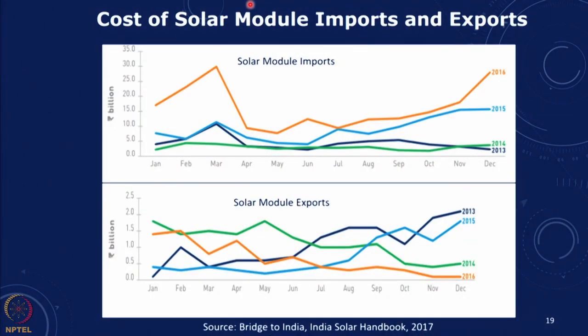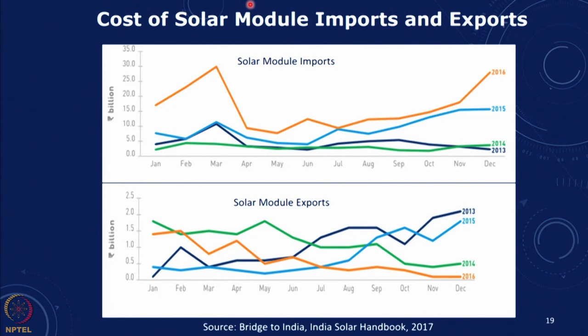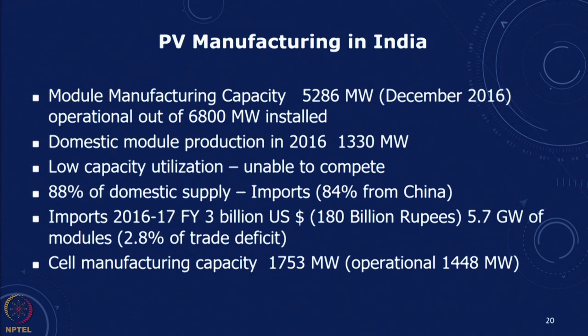Another issue to think about when talking about transitions: when we started the solar mission, India was a net exporter of PV. But today we are importing more than 80 percent of our modules, most of it from China. The module manufacturing capacity in 2016 was about 5,300 megawatts which was operational out of a 6,800 megawatt installed capacity, and actual production was only an average of 1,330 megawatts — a very low capacity utilization because we are unable to compete with large Chinese companies.